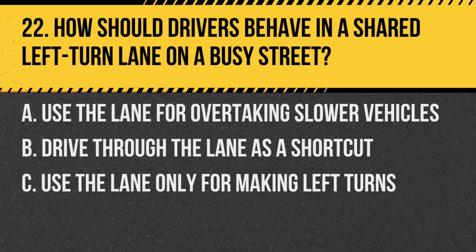Question 22. How should drivers behave in a shared left turn lane on a busy street? A. Use the lane for overtaking slower vehicles. B. Drive through the lane as a shortcut. C. Use the lane only for making left turns. Answer: C. Use the lane only for making left turns. Shared left turn lanes are meant for drivers from either direction to safely make left turns.